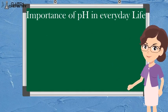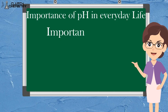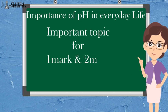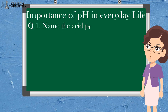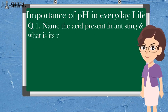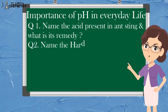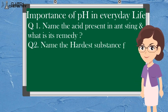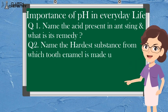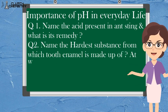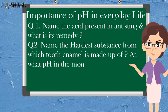This topic has a lot of questions from 1 mark and 2 mark. Like: name the acid present in a bee sting and what is its remedy? And the second one is: name the hardest substance of which tooth enamel is made up of, and at what pH in the mouth does it get corroded?